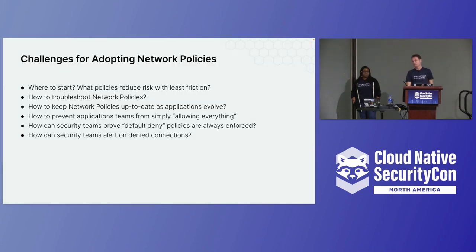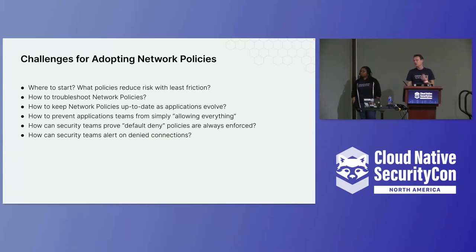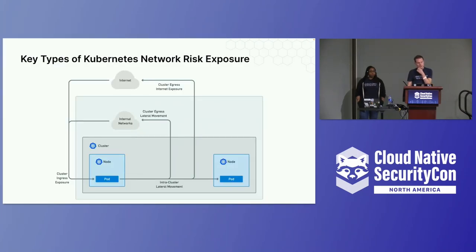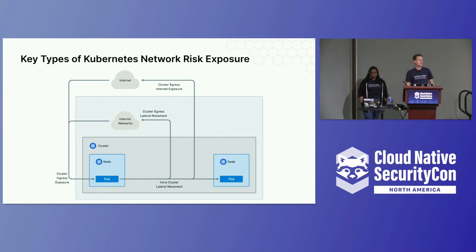Working with network policies in general is a big challenge. You don't want to block your developers, but you also have requirements to secure your applications. A deny-all policy is effective but very difficult to work with for each independent service. There are four key risk areas: exposure from the internet, access from internal networks to data people shouldn't reach, lateral movement risk intra-cluster or between clusters, and egress risk for workloads reaching external networks or the internet — for example, a reverse shell being opened.